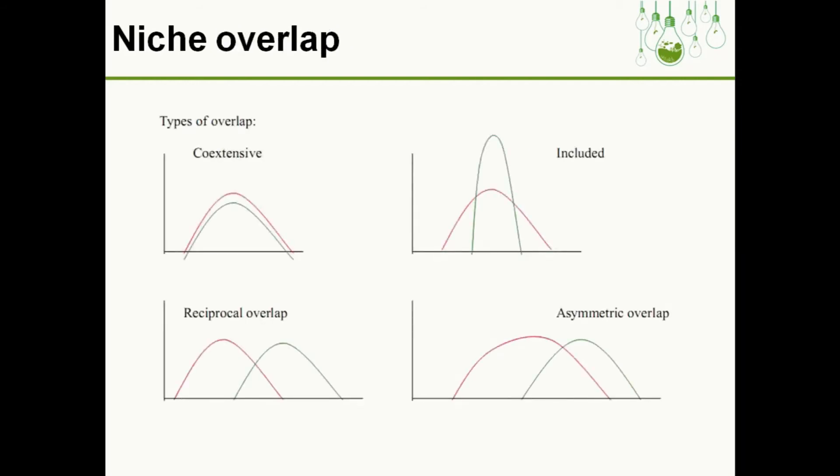We can have four different types of niche overlap. Coextensive is where both species have the same types of feeding behavior.